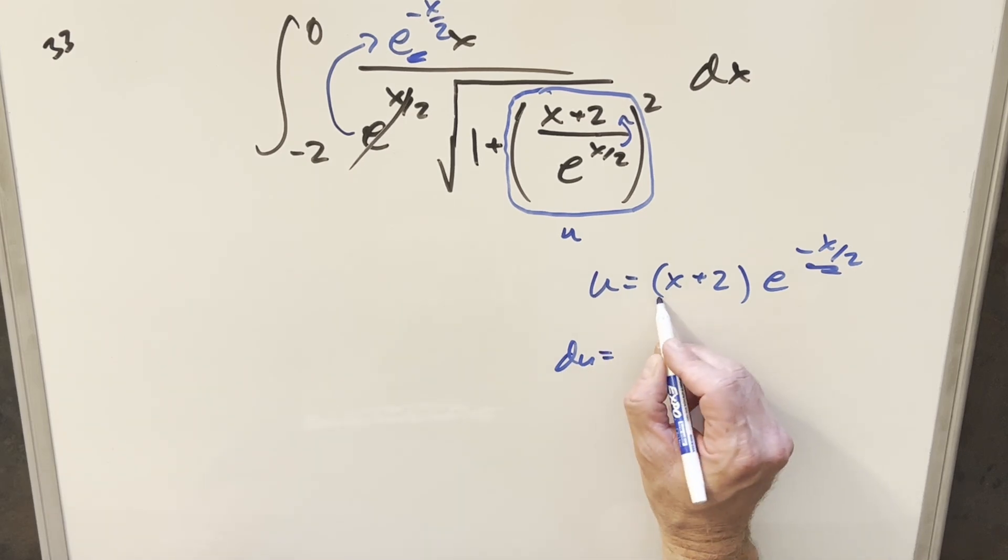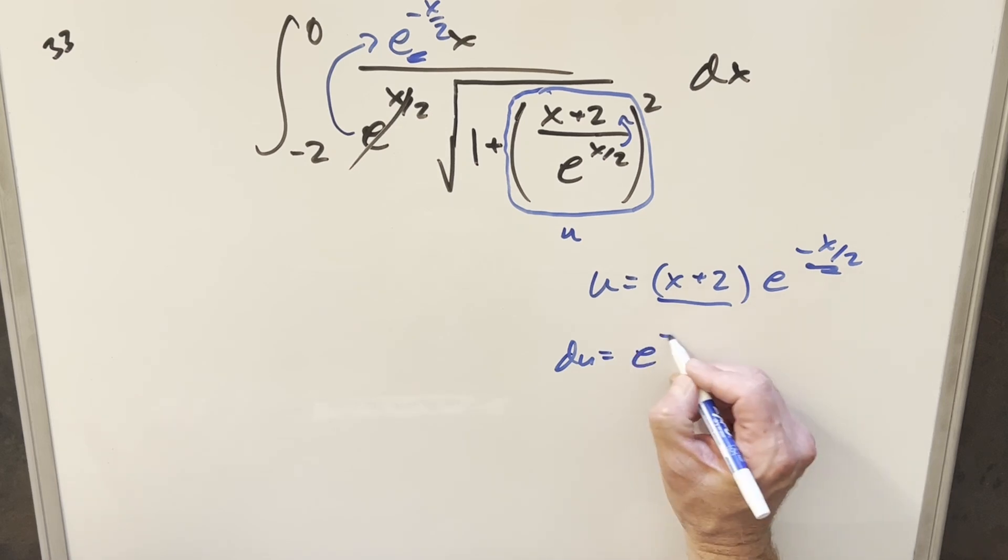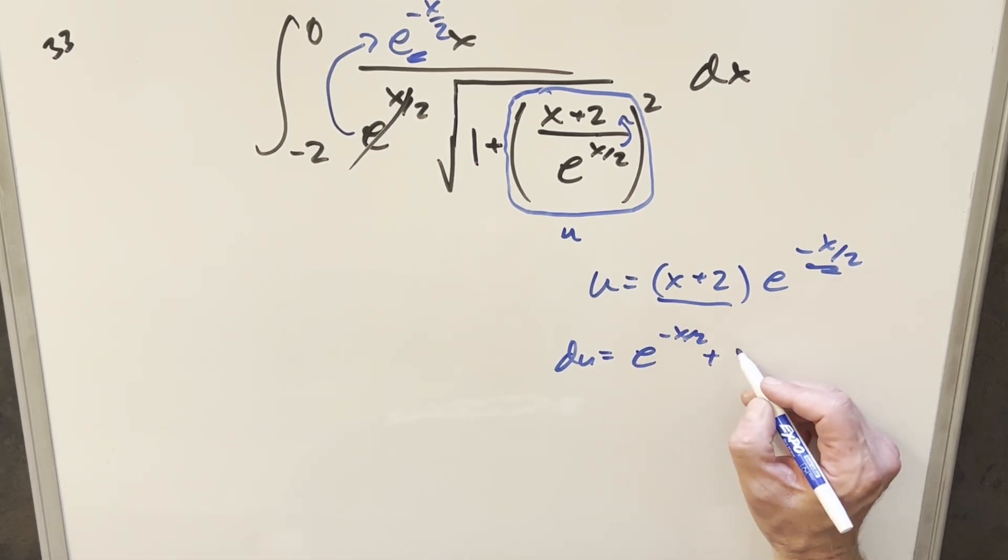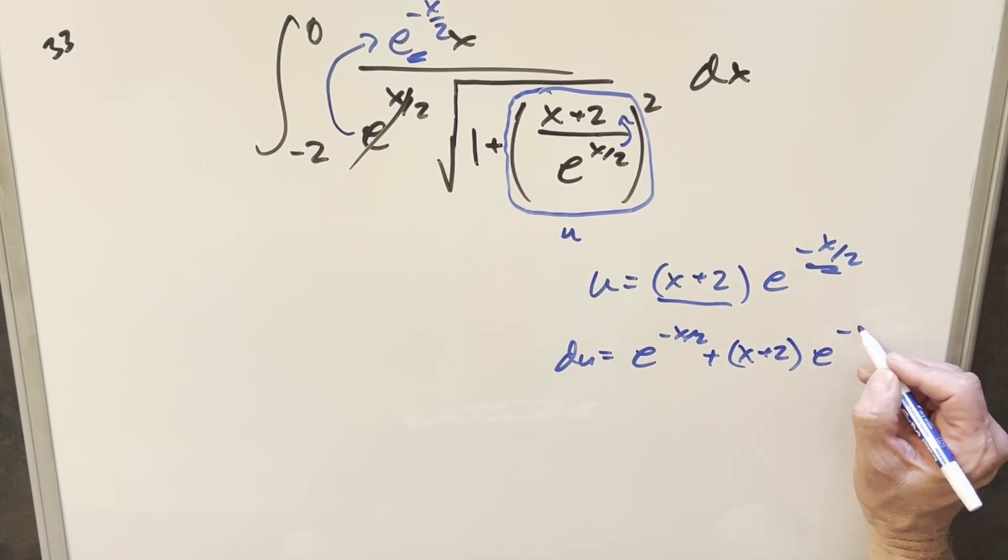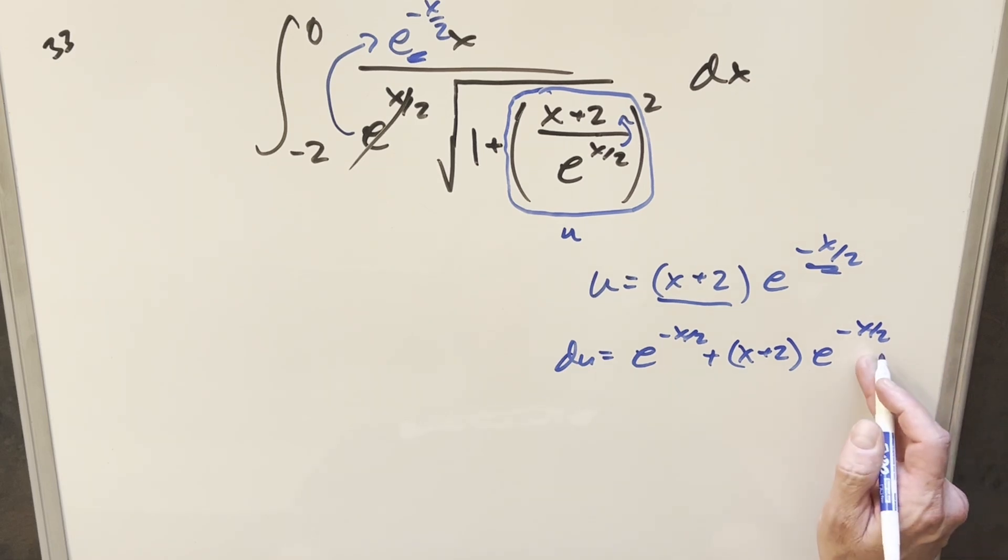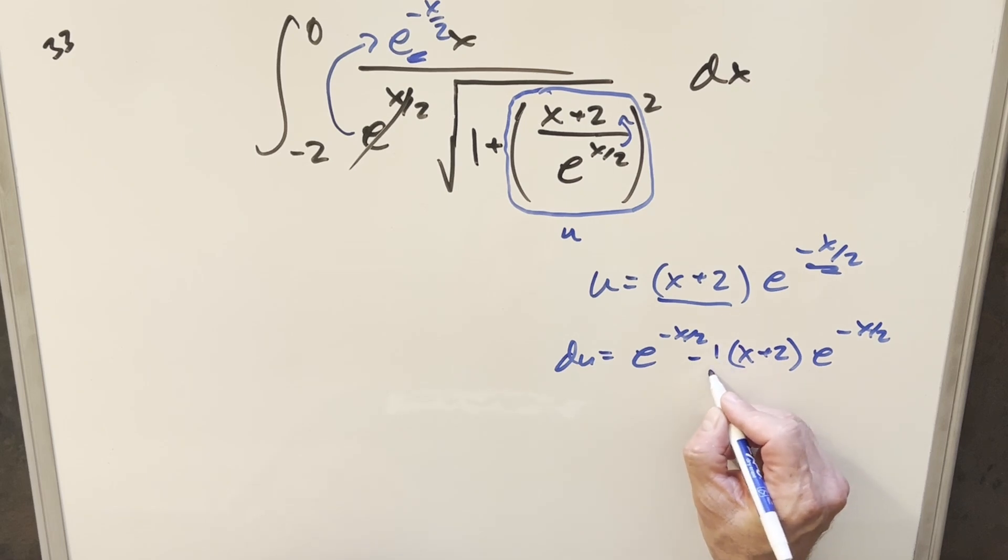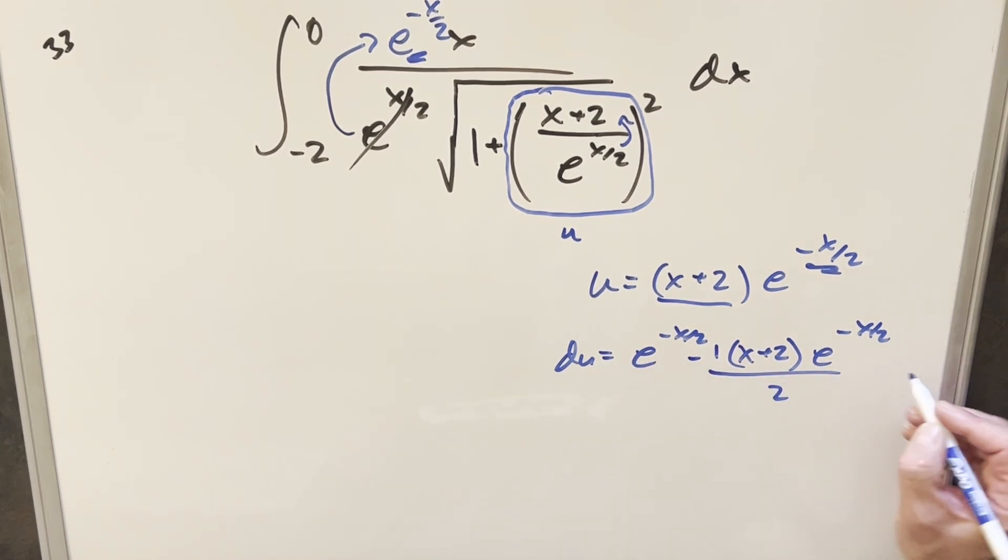So going ahead for du, first we'll use the product rule. Integrating this first part is just going to be 1 times the second part, e^(-x/2). And then for the second part, we're going to keep the first part, we're going to keep x + 2, derivative here. This is just going to be e^(-x/2), but I'm going to need the chain rule. And what's going to happen is it's going to bring out a minus 1 half right here. And then we'll have a dx at the end.